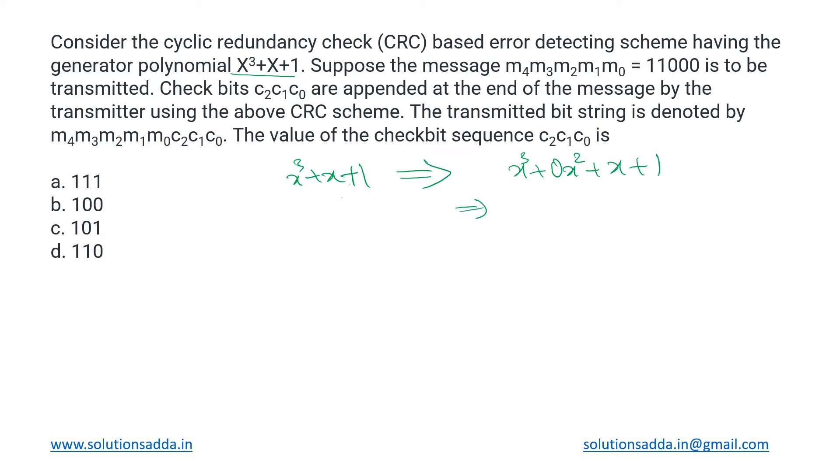Now the message bits—it is a five bit message from m0 to m4 which is given as 11000—that is to be transmitted using CRC as error detection mechanism.